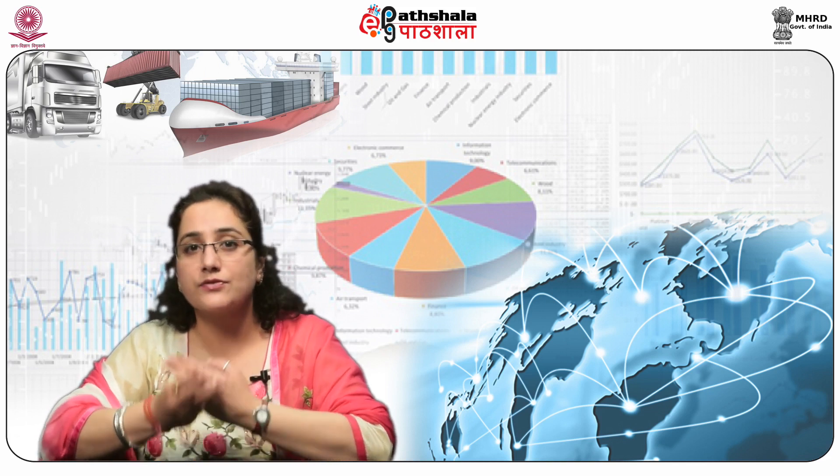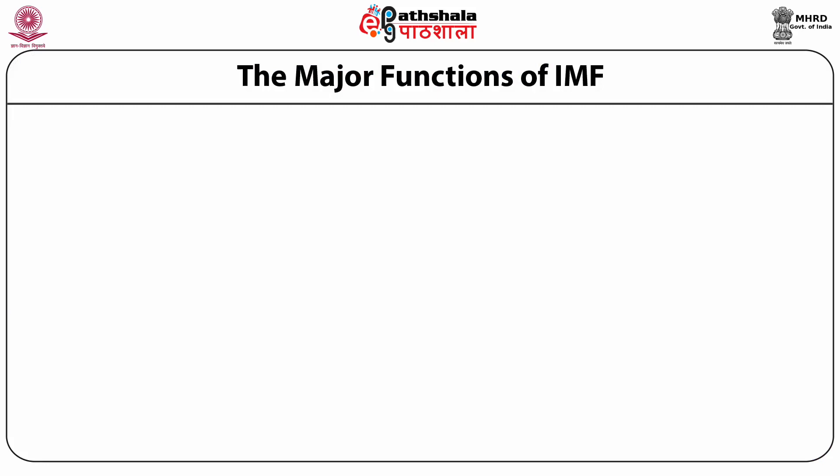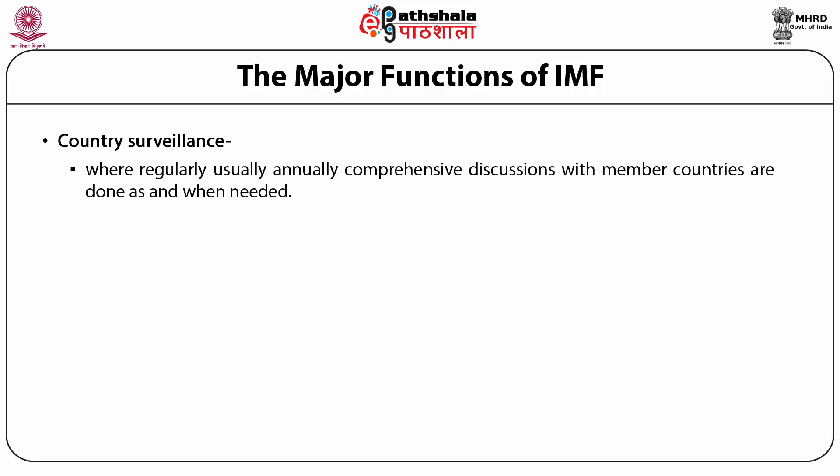Surveillance is carried out at three levels. The first is country surveillance, where regularly — usually annually — comprehensive discussions with member countries are done as and when needed. This consultation is known as Article 4 consultation. In this, a team of economists visits a member country to assess their economic and financial developments. They carry out discussions with policy makers and central bank officials. The team brings out a report which is later presented for discussion by the Executive Board. The summary of views of the Executive Board is then communicated to the government of that country.